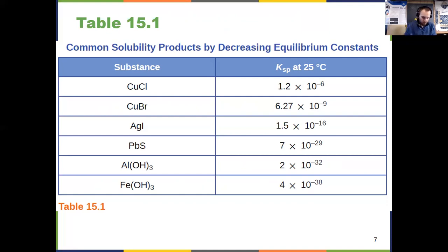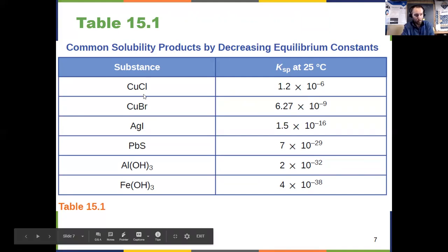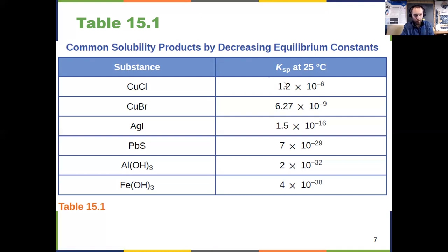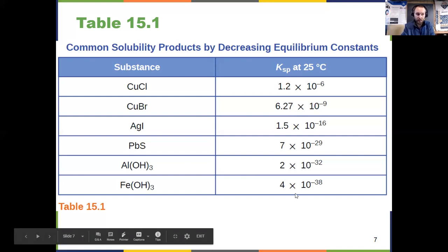Another important application for Chapter 15 is using these solubility product constants to determine what is the most soluble. In this case, for this table, it's going to be copper chloride because it has the largest equilibrium constant. Even though these are all small numbers, because remember, these are negative exponents. In this case, iron hydroxide is the least soluble at 10 to the negative 38.